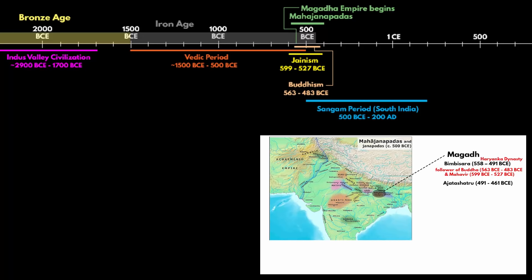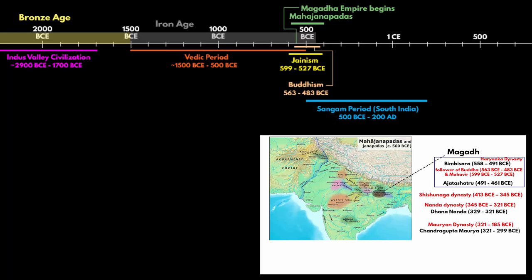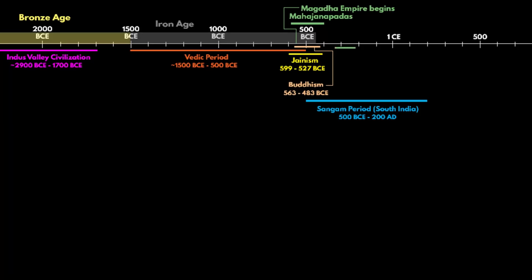Bhimbisara was succeeded by his son Ajatashatru. These two father and son were regarded as important rulers during the initial phase of the Magad empire. After them, Shishunagar dynasty started ruling, followed by the Nanda dynasty. The last ruler of the Nanda dynasty, Dhananand, was defeated by Chandragupta Maurya — helped by Acharya Chanakya — marking the beginning of the Maurya dynasty.